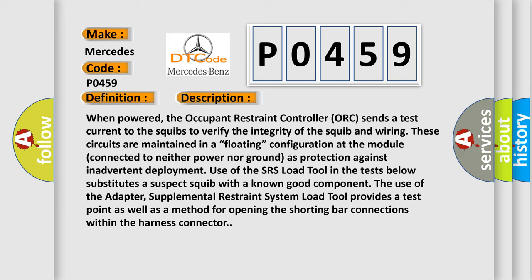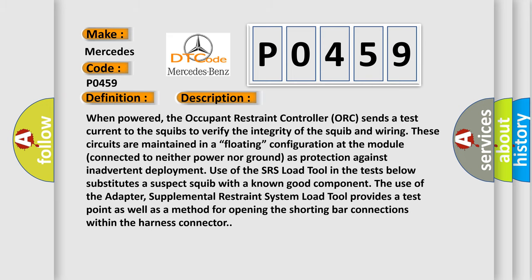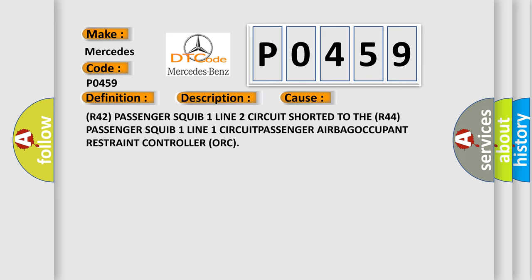Use of the SRS load tool in the tests substitutes a suspect squib with a known good component. The adapter supplemental restraint system load tool provides a test point as well as a method for opening the shorting bar connections within the harness connector. This diagnostic error occurs most often in these cases: R-42 passenger squib one line two circuit shorted to the R-44 passenger squib one line one circuit, passenger airbag occupant restraint controller (ORC).